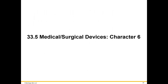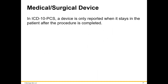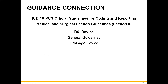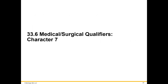Now we're on to the sixth character, and this is when we have a device. For instance, somebody has an interventional cardiology procedure and there's a stent — the stent stays in the coronary artery. It's these types of devices that we're talking about. Sometimes there'll be drains and other different devices that are actually left in. That covers the sixth character.